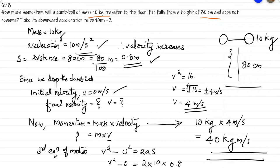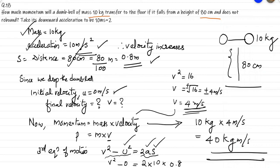To summarize: the given data is mass equal to 10 kg, acceleration equal to 10 meter per second square, and distance equal to 80 centimeter. To find the momentum we first need the final velocity, so we use V square minus u square equal to 2 a s. Taking the positive value of V gives plus 4, because the acceleration is positive and velocity increases. Then momentum equals mass into velocity: 10 into 4, giving 40 kilogram meter per second.